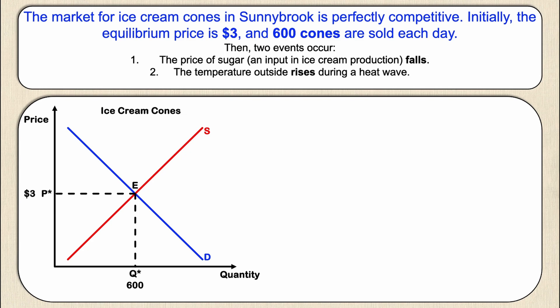Let's look at the first event. The price of sugar, which is an input into the ice cream production process, falls. If the price of an input in production falls, it must be cheaper to produce ice cream, and if it's cheaper to produce ice cream then more ice cream will be supplied in the market because profits will be higher. This will shift the supply curve to the right. My new supply curve is denoted as S prime to indicate it's the new one, not the original.